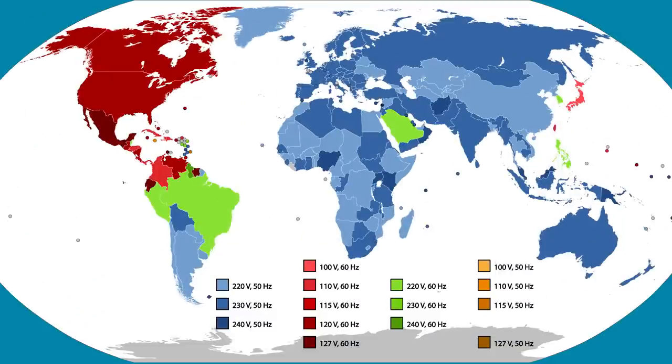120 is the RMS voltage in the US and Canada, but the RMS voltage varies in countries around the world. Other countries have RMS values of 100 volts all the way up to 240 volts. But most commonly, RMS voltages are 220 and 240 volts. Note that the frequency for all world mains voltages are either 50 or 60 hertz.